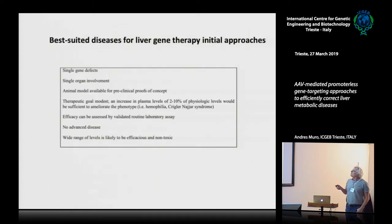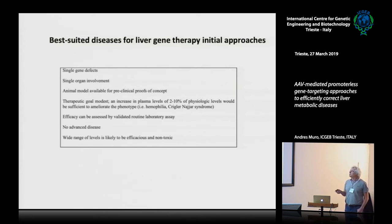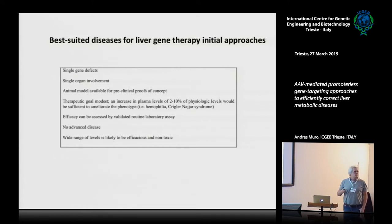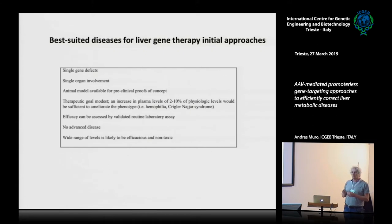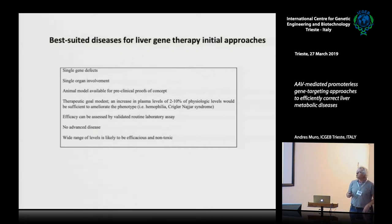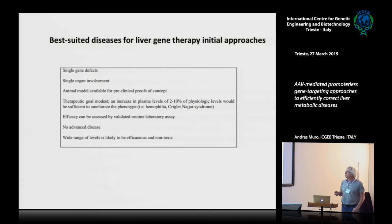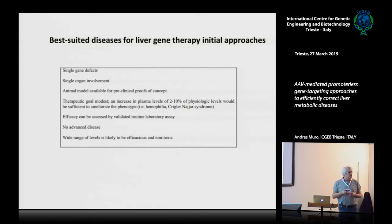For liver gene therapy, the characteristics of a disease that make it suitable for a gene therapy approach are: essentially having only one gene to correct, being expressed in one organ, having animal models to test therapies, and having a modest therapeutic goal. Also very important is having a simple assay to determine the therapeutic efficacy of the procedure, otherwise everything becomes more complicated.